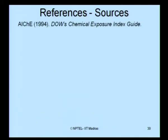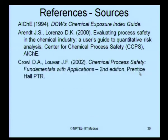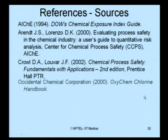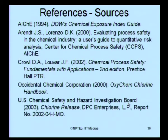These examples and literature are based on references including AIChE 1994, Arendt and Lorenzo's Evaluating Process Safety in the Chemical Industry, the Center for Chemical Process Safety User Guide to Quantitative Risk Analysis, Crowl and Louvar's Chemical Process Safety: Fundamentals with Applications, Occidental Chemical Corporation 2000 handbook, and the US Chemical Safety and Hazard Investigation Board report. Thank you very much.